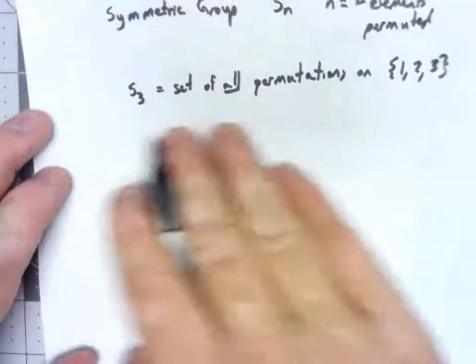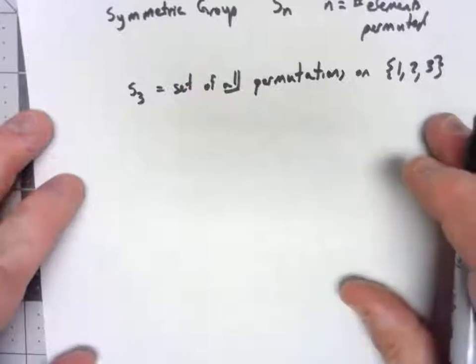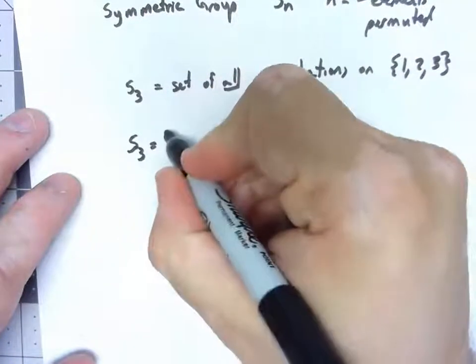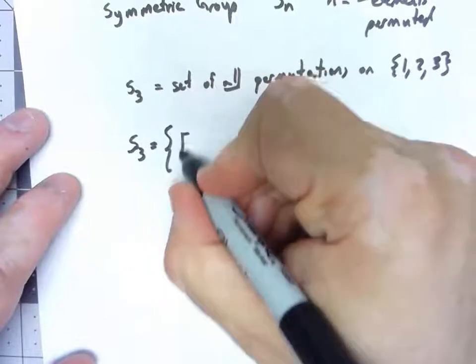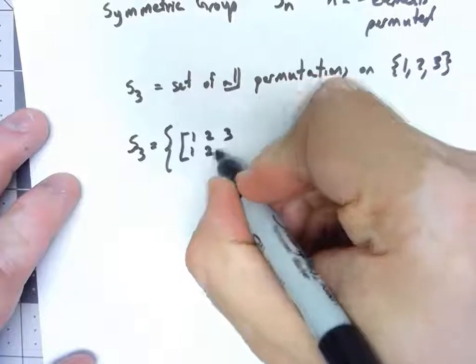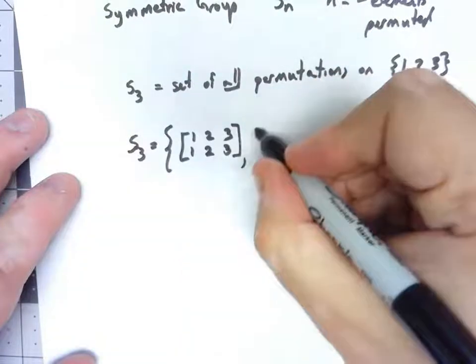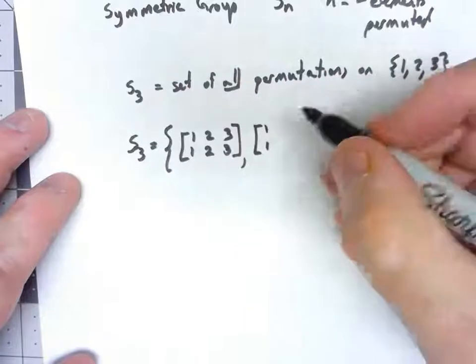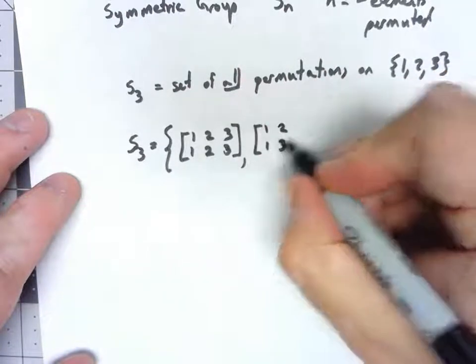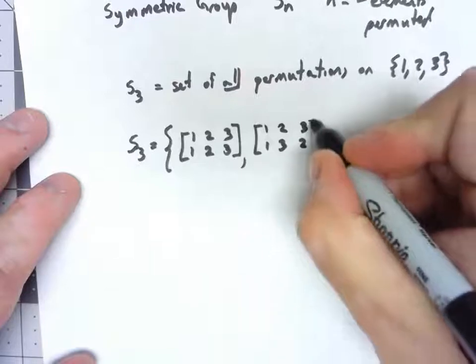Because this is such a small group, we can actually list out what all them are. Certainly it has to have an identity. We could have 1 go to 1, but if it's not the identity, then that means that 2 goes to 3, and 3 goes to 2.